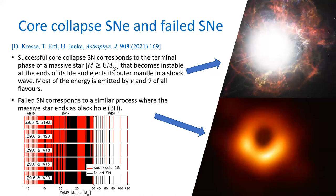There are two different possibilities at this point. The first is a successful core collapse supernova explosion. The second is where the gravitational pull is so strong that the mass collapses onto itself and the star becomes a black hole. It is well known that we don't actually know the exact percentage of successful versus failed core collapse supernovae, as shown in the plot in the lower part of the slide where red lines are successful ones and black lines are failed ones.